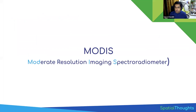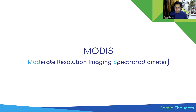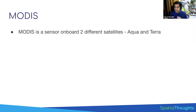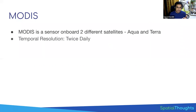We'll be using this dataset called MODIS. MODIS stands for Moderate Resolution Imaging Spectroradiometer. This is one of the most important sensors in remote sensing and has a wide range of applications. MODIS is a sensor currently operating on two different satellites — one is called Aqua and one is called Terra. That means it's able to capture images of the Earth twice daily, and because of its moderate resolution, it's able to capture the entire Earth twice a day.